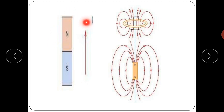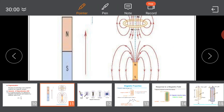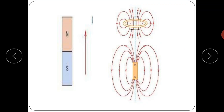Suppose this is a permanent magnet with a north pole and a south pole. The magnetic field lines go from north to south pole externally, and from south to north pole internally.